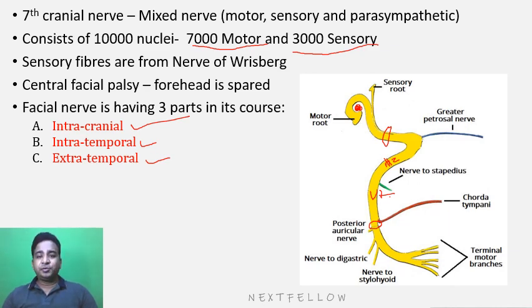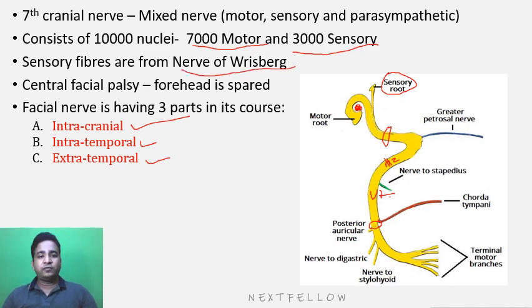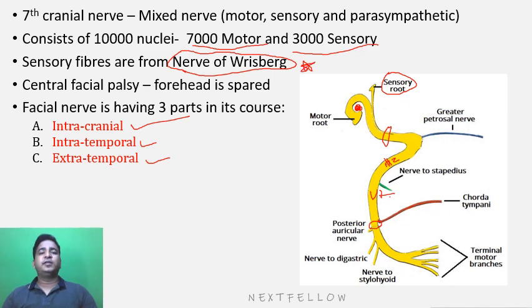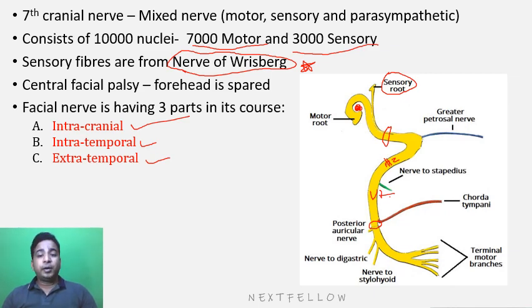The sensory root is known as nervus intermedius, also called the nerve of Wrisberg. This has been asked in exams. The sensory fibers in the facial nerve are known as nervus intermedius or the nerve of Wrisberg.